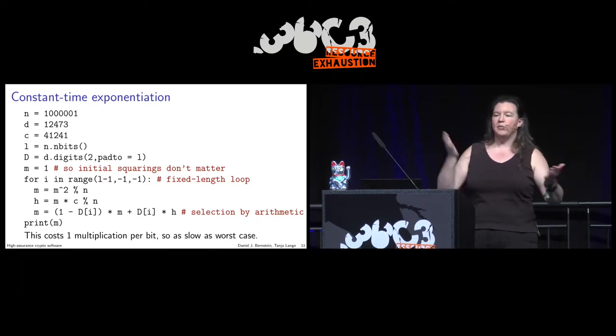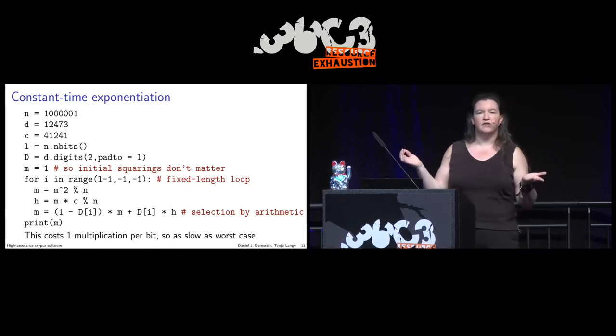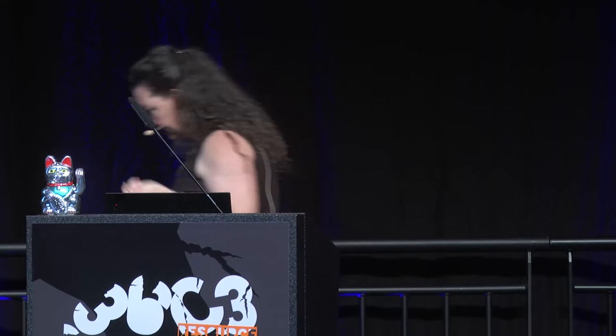I was talking about elliptic curves. When you do RSA or Diffie-Hellman, you multiply by a generator. Let's now look at how this works with elliptic curves.